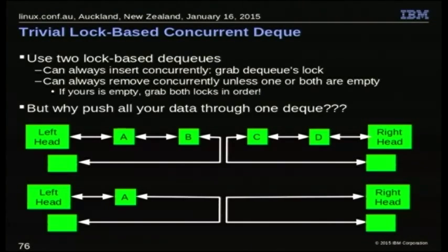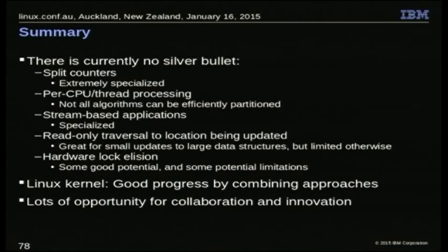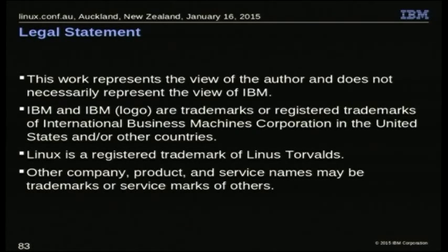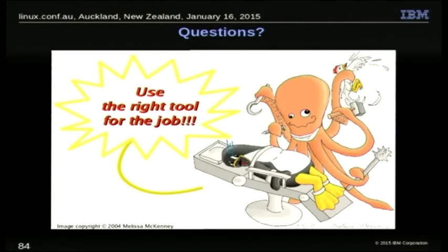The solution to the double-ended queue problem: just have two of them. Easy. And really, if you have a parallel program putting all its data through a deque, you've got a design problem. This is currently an R&D prototype — if you use it in production, don't cry to me when it breaks. Some places to look for more information about RCU and this work are in the slides available after the presentation. Big round of applause for Paul — and go enjoy lunch. Thank you all for your time and attention.